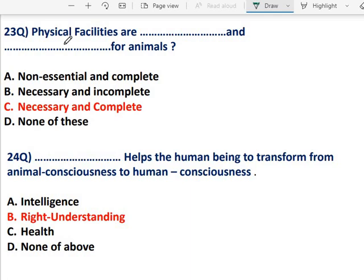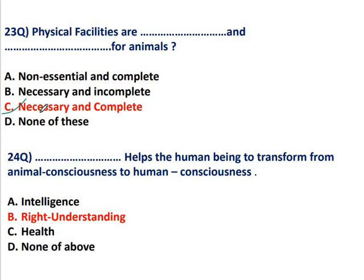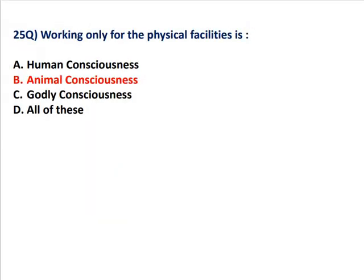Question 23: Physical facilities are blank and blank for animals. For animal consciousness, physical facilities complete it entirely. But for human consciousness, physical facilities are incomplete — unki chahate kabhi bhi khatam nahi hoti. So the correct answer: physical facilities are necessary and completed for the animal, but for humans they are necessary but incomplete. Question 24 asks what helps the human being transform from animal consciousness to human consciousness. Question 25: Working only for physical facilities — jo sirf physical facilities par focus karta hai — that is the animal consciousness.